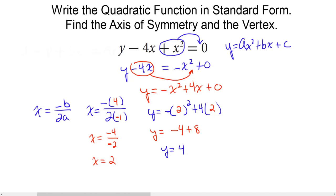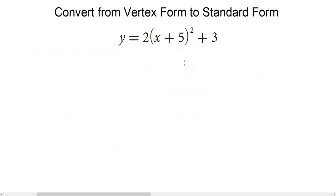So now we have all the pieces of information we need. Our equation is in standard form, our axis of symmetry is x equals 2, and our vertex is at the point (2, 4). Now let's talk about converting a quadratic function from vertex form to standard form. Here we have our function in vertex form: y equals 2 times (x plus 5) squared plus 3. We need to work out the right side, and we will end up with our function in standard form.